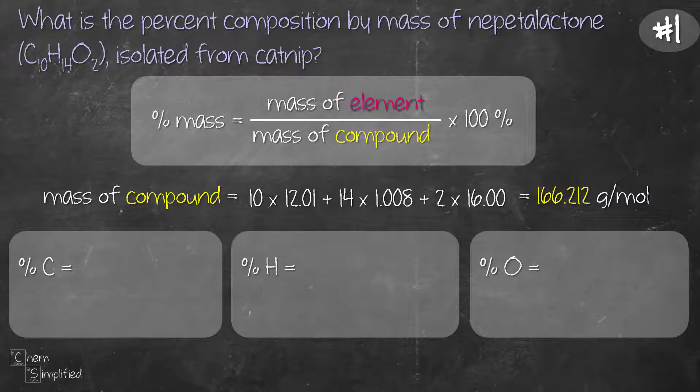Starting with the percent of carbon, we take the mass of the element which is going to be 10 times 12.01. Since carbon's atomic mass is 12.01 and there are 10 carbon present in the formula, we divide with the mass of compound which is 166.212 times 100 and we get 72.26 percent. That's the percent of carbon in the formula.